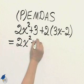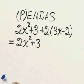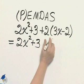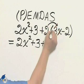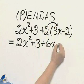But I do remember the distributive law: 2 times 3x, 2 times negative 2.